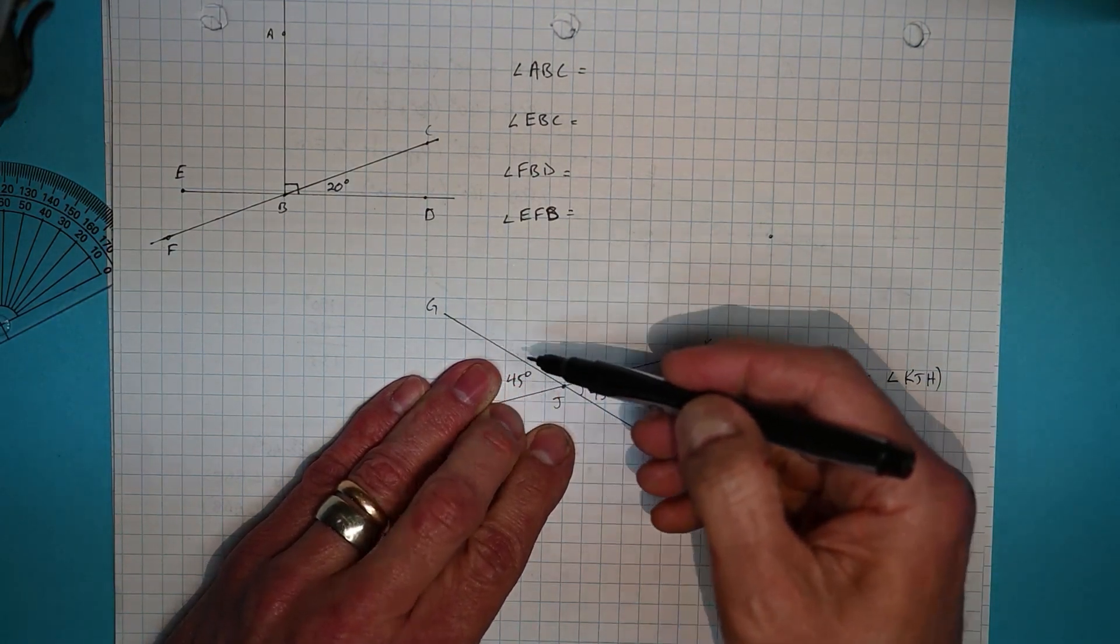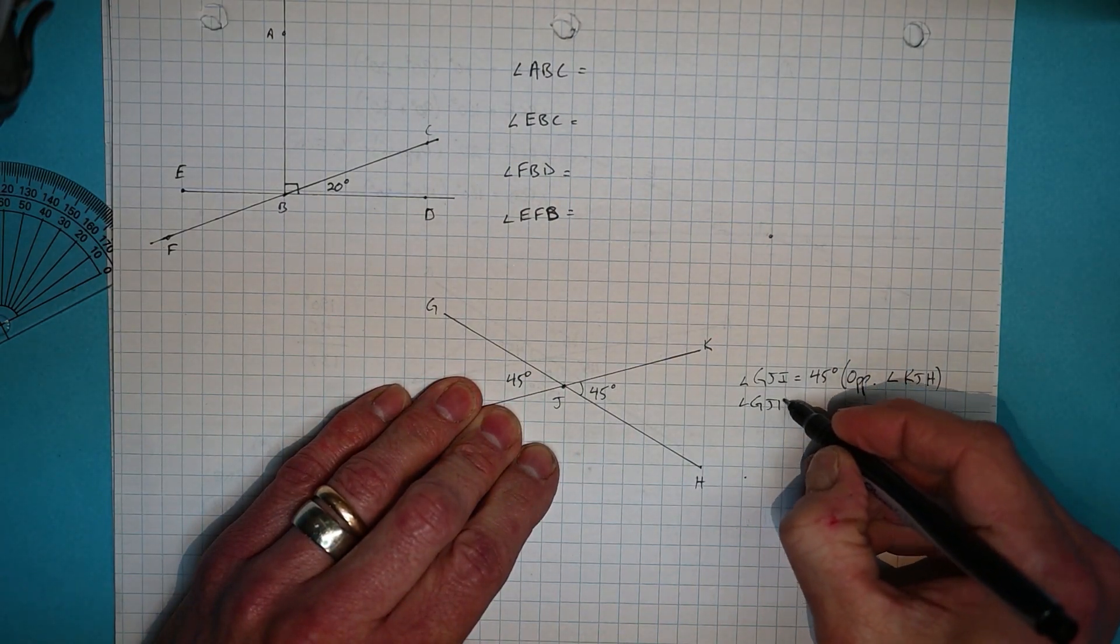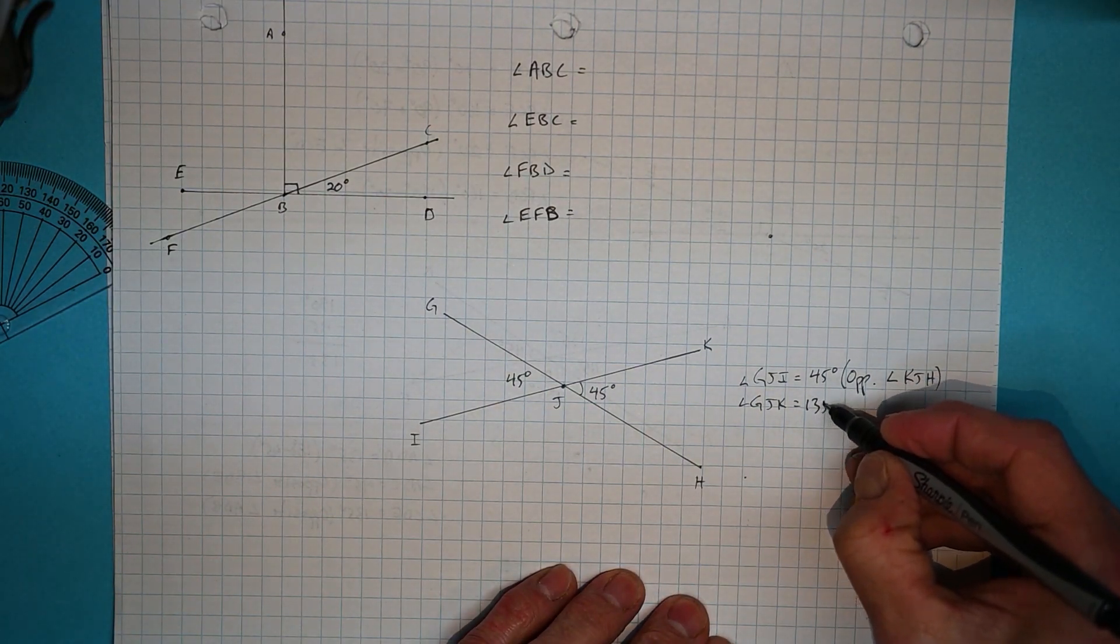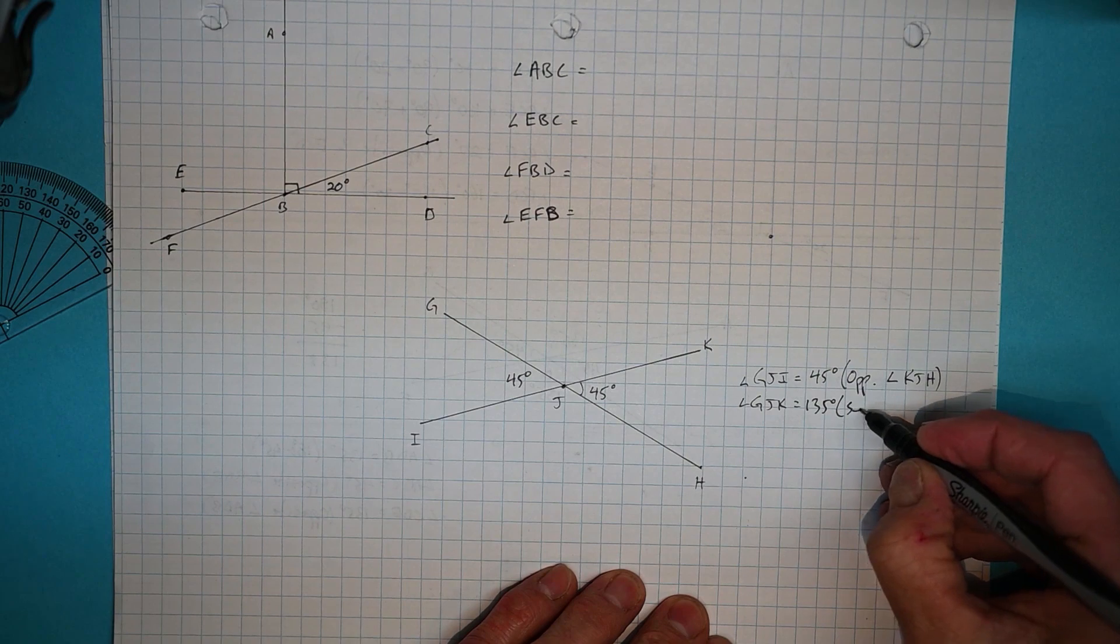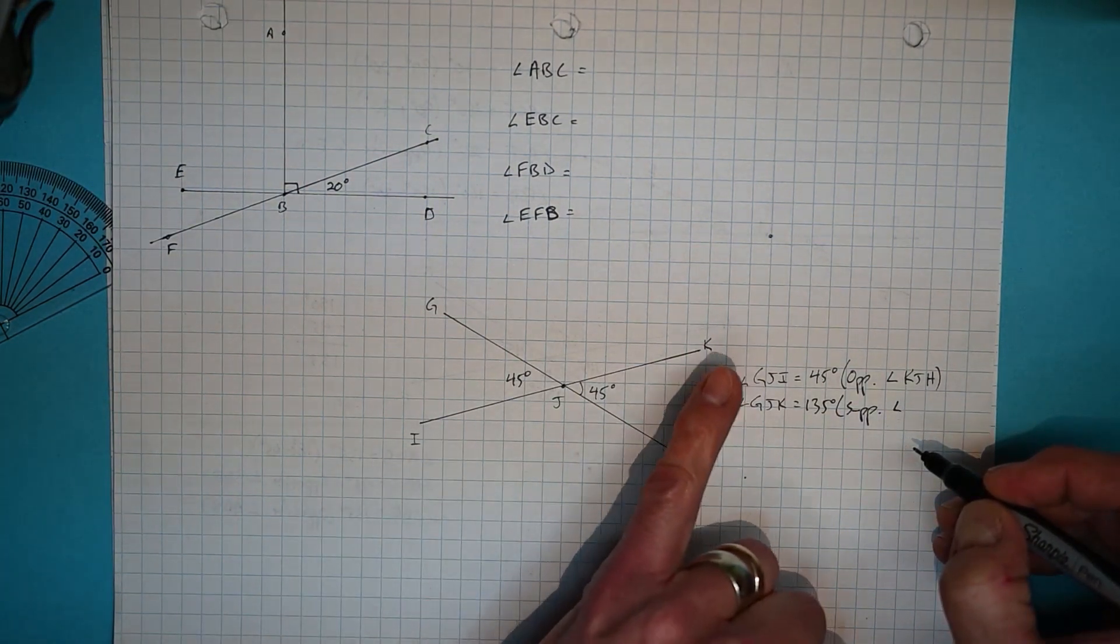So we now know that GJK must be equal to 180 minus 45, which gives us the 135 degrees because it is supplementary to angle KJH.